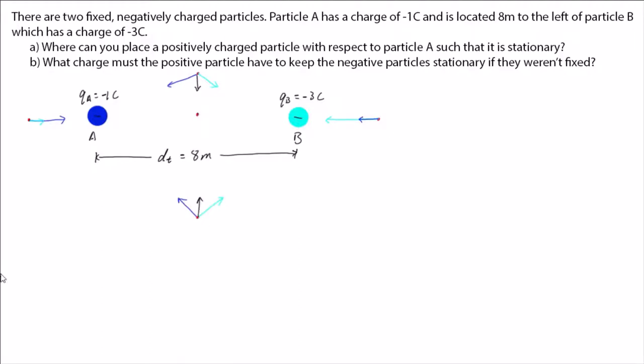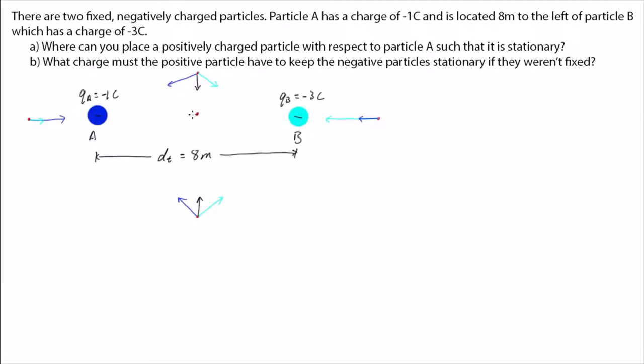But if the positive particle is placed between A and B, it would be pulled to the left by A, let's call this force FA, and to the right by B, FB. If we can make these two forces equal, then the positive particle will experience a net force of 0, and thus be stationary.